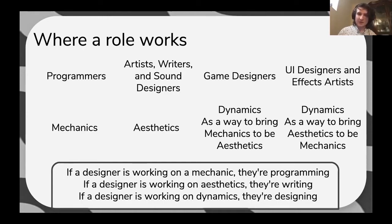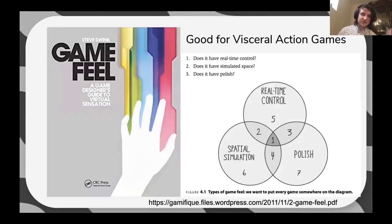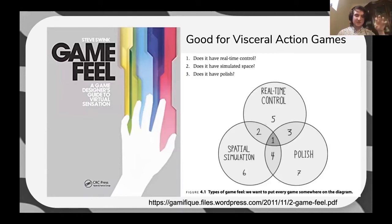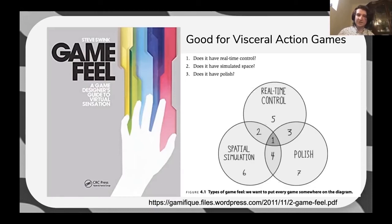So MDA is just one framework for game design. There's another one I really like called Game Feel, based on a book by Steve Swink. It's really good for visual action games, which our game fits into. It divides games into seven categories and focuses on how to make the best game that excels across all of them — things like real-time input, spatial simulation where things collide and move as expected, and polish, where the game communicates what you're doing effectively.